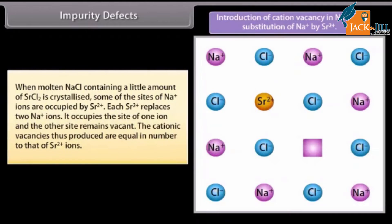Impurity defects: When molten NaCl containing a small amount of SrCl₂ is crystallized, some of the sites of Na⁺ ions are occupied by Sr²⁺ ions. Each Sr²⁺ replaces two Na⁺ ions — it occupies the site of one ion and the other site remains vacant. The cationic vacancies thus produced are equal in number to that of Sr²⁺ ions.